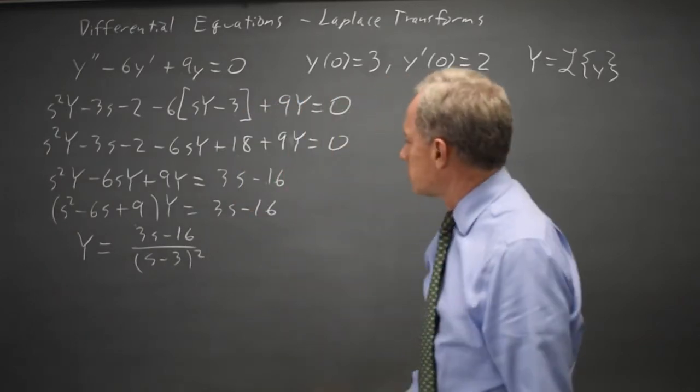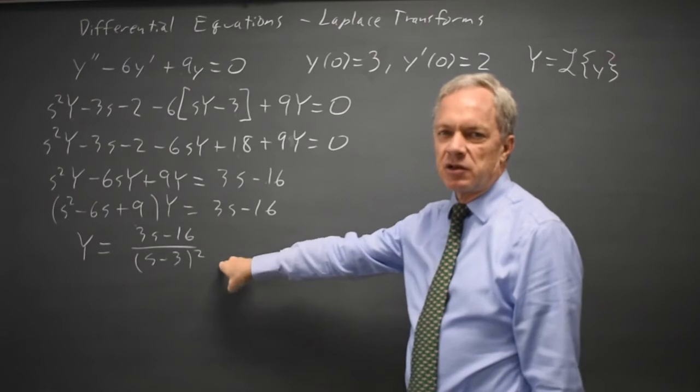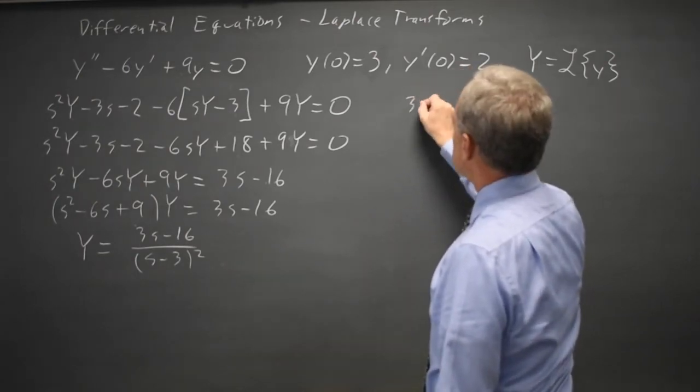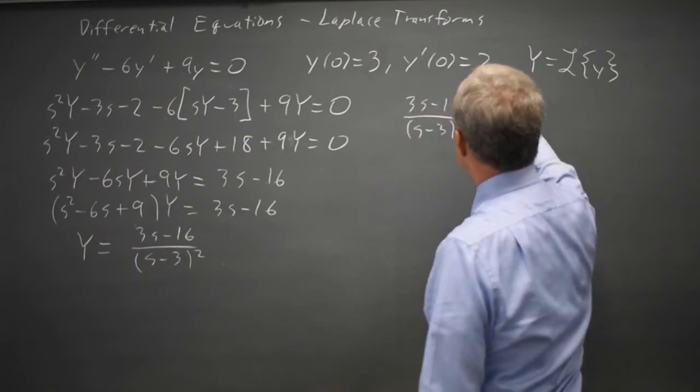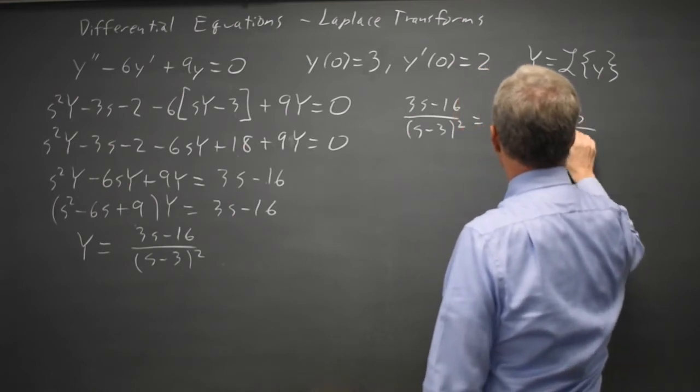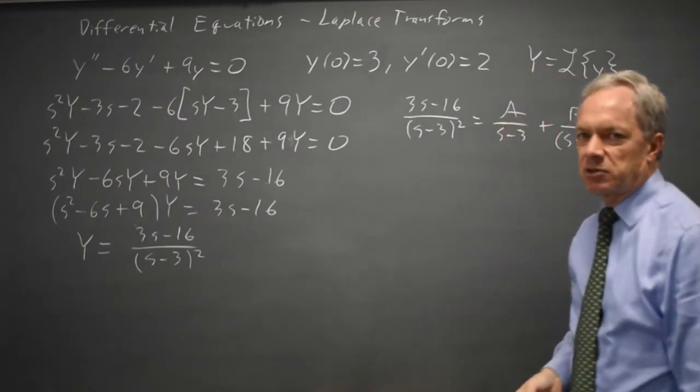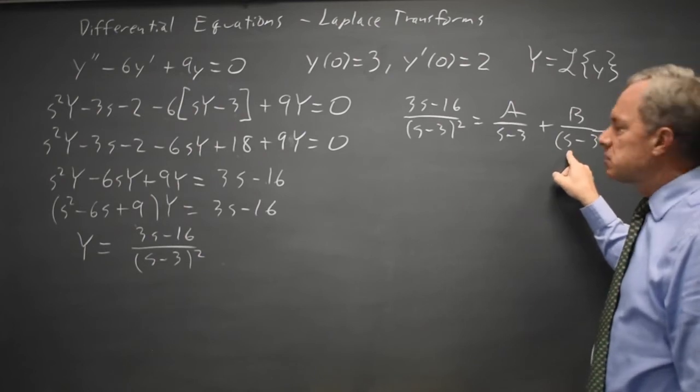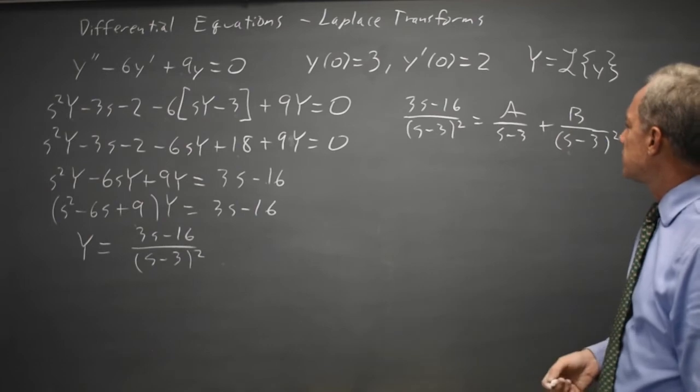And I'm going to write this for partial fractions. In some cases you can solve this by inspection. 3s minus 16 over s minus 3 squared equals a over s minus 3 plus b over s minus 3 squared. It's important to have the algebraic skill for this. Even though the denominator here is quadratic it's the square of linear factors so your numerator for partial fractions is only the constant b.